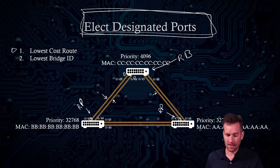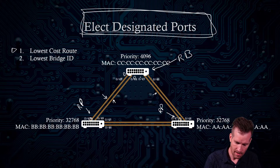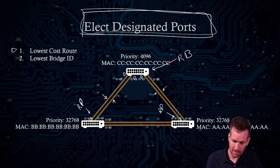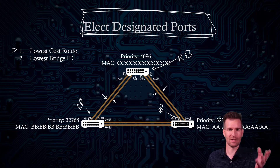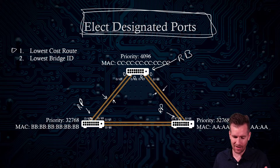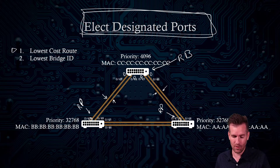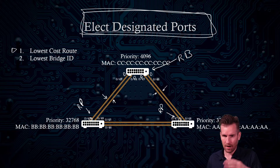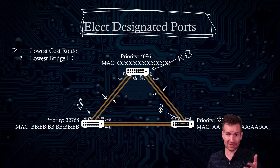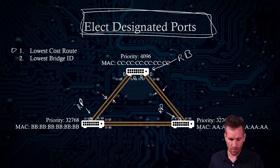Jumping over to the other links, again it's the root bridge side that holds the designated port. You can see a pattern here: it's always the root bridge side that has all the designated ports. Whatever ports are on the root bridge are all designated ports.